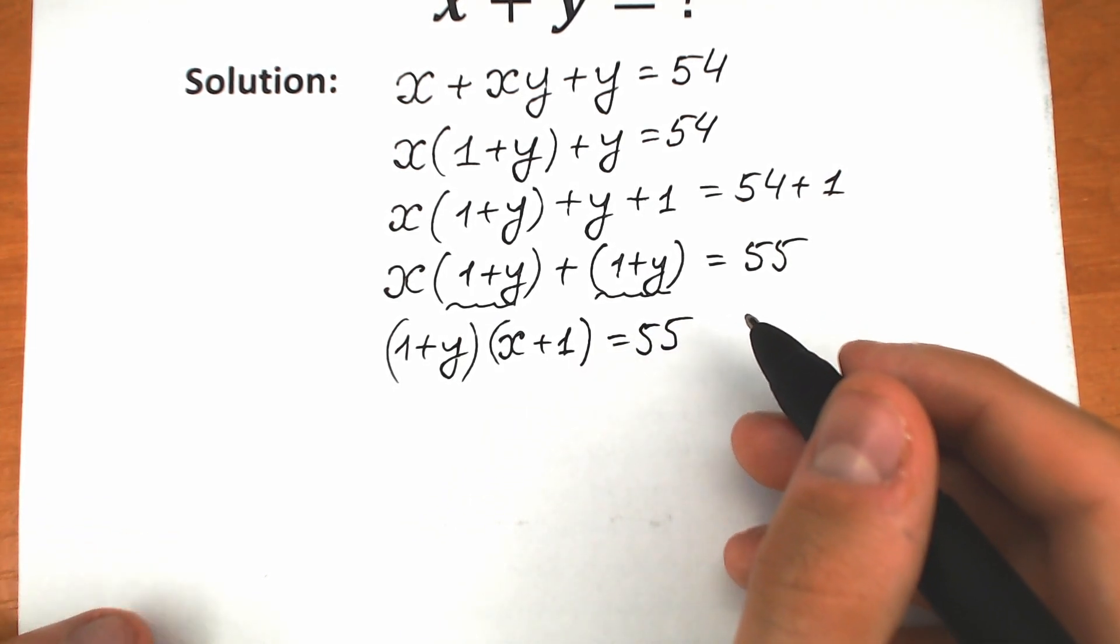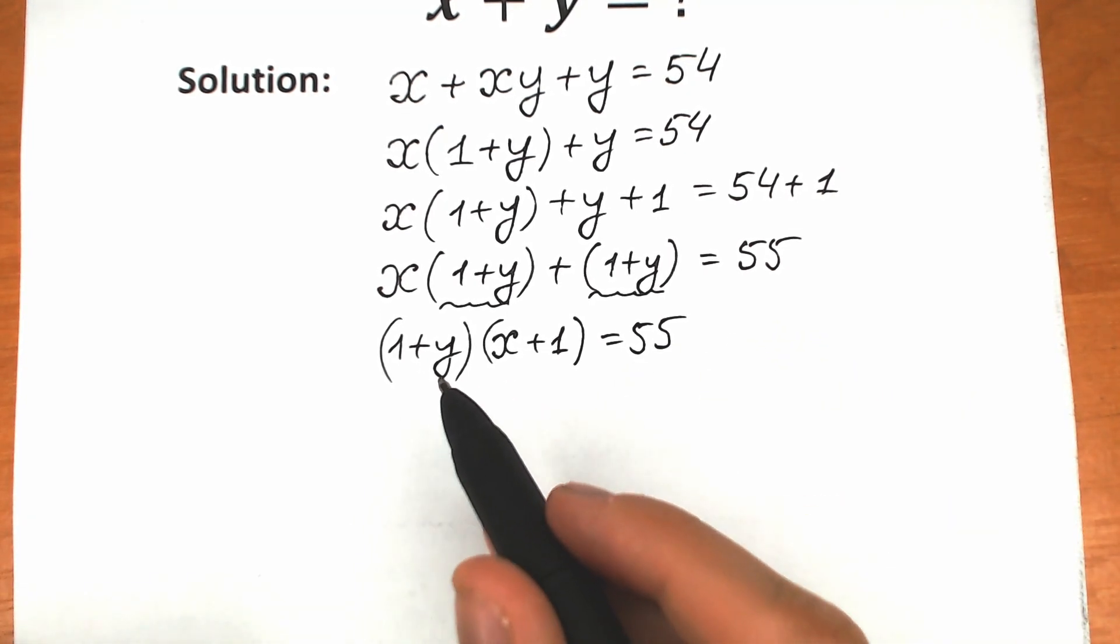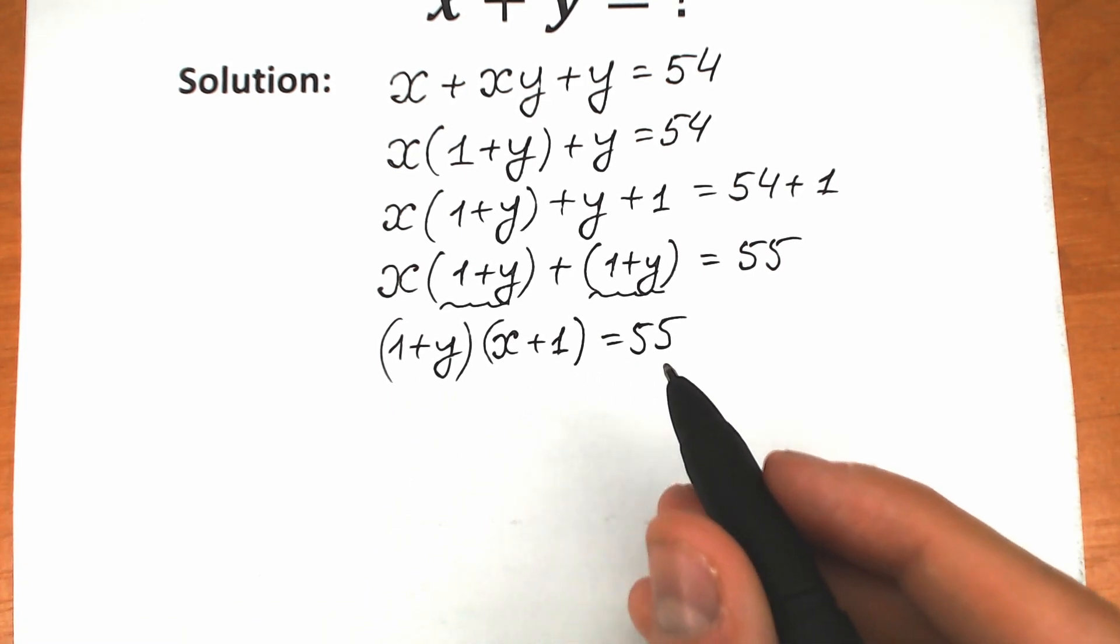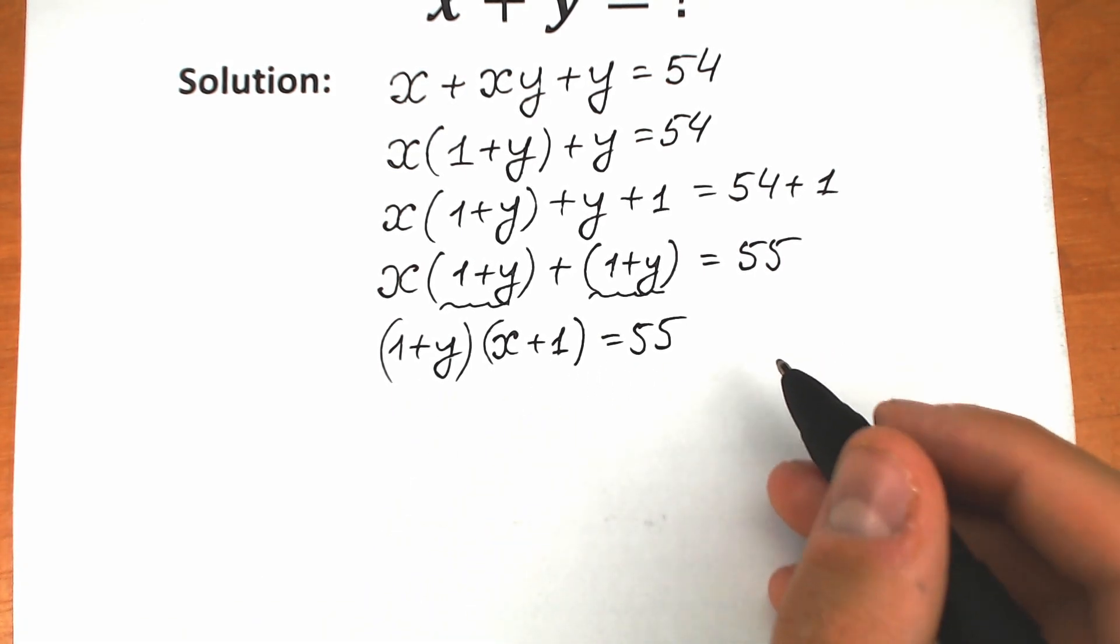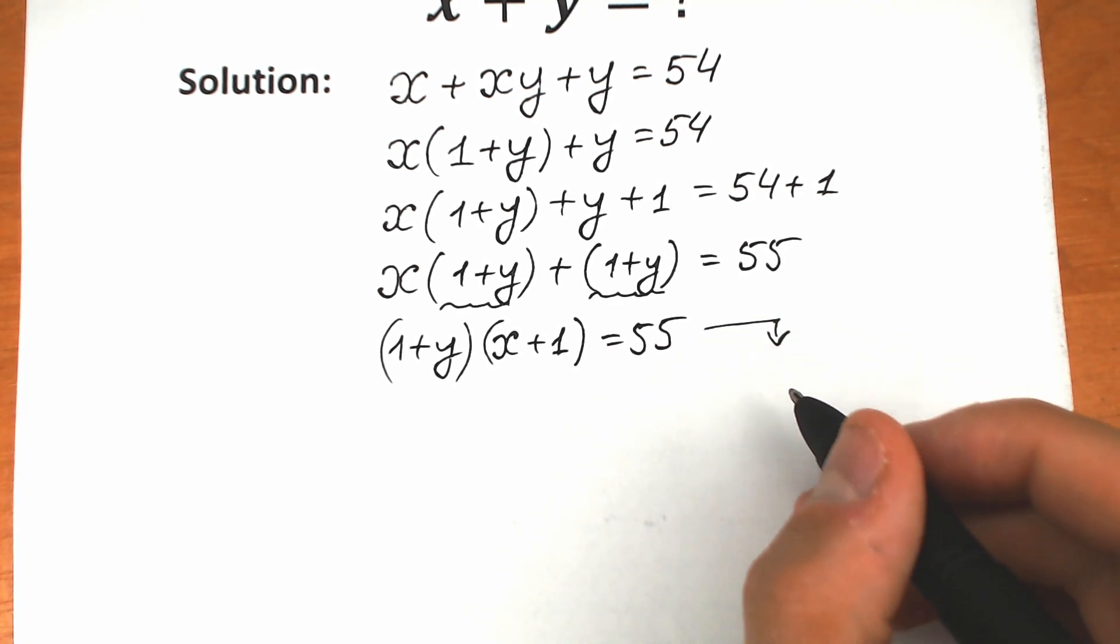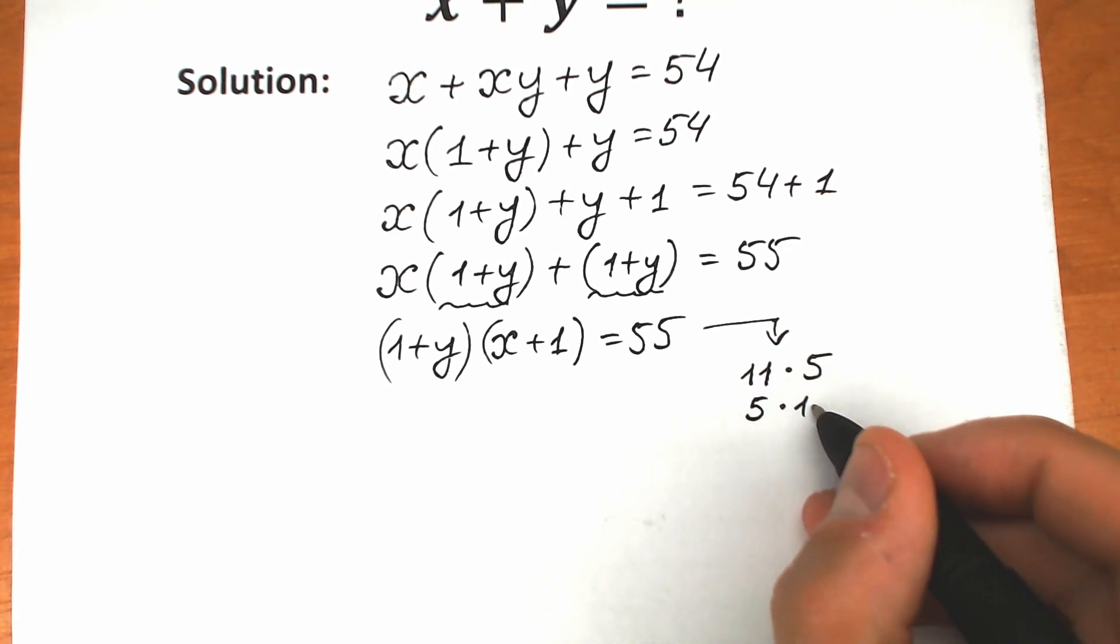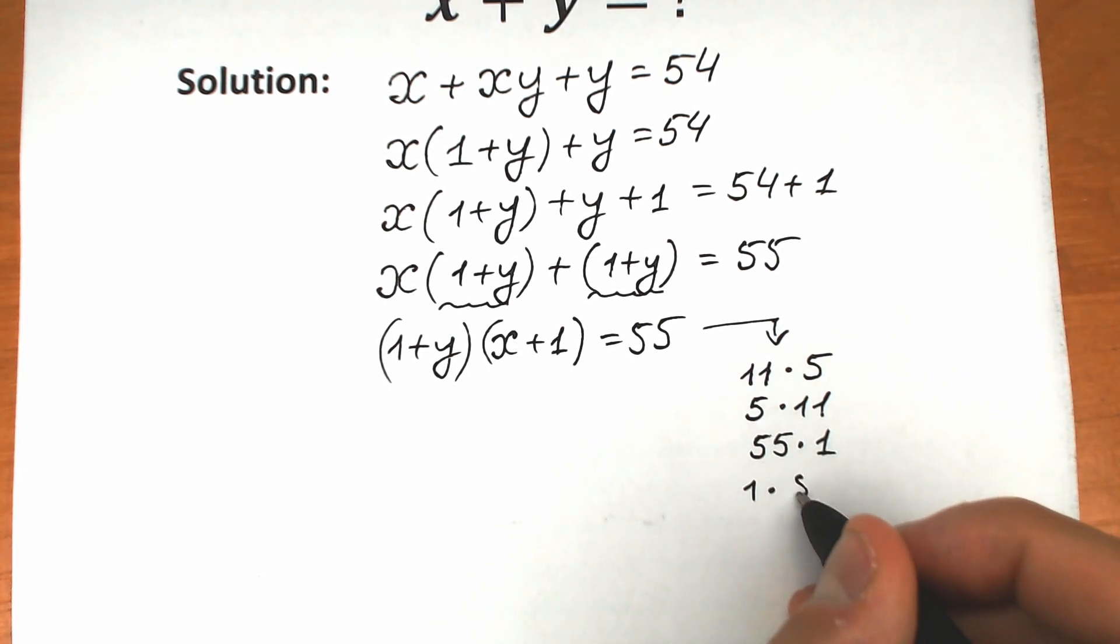Right now we can rewrite 55 as a product of two values. We should do this because we have a product of two values inside these parentheses. How can we express 55? We have 11 times 5, the first expression. Second expression, 5 times 11. Third expression, 55 times 1, and fourth, 1 times 55.